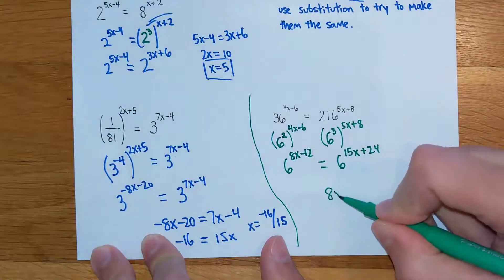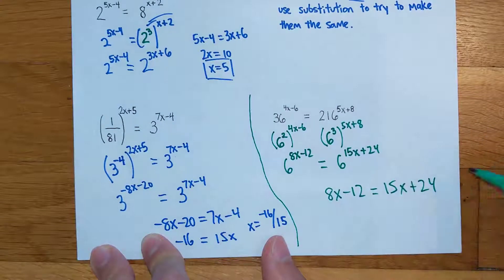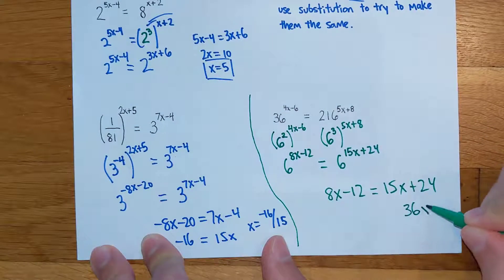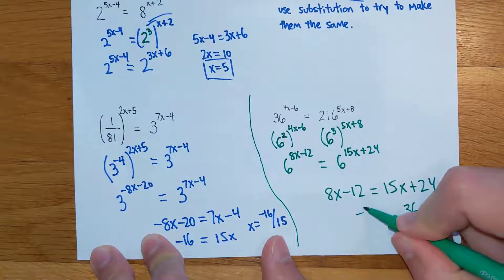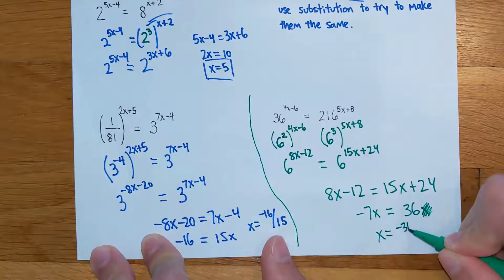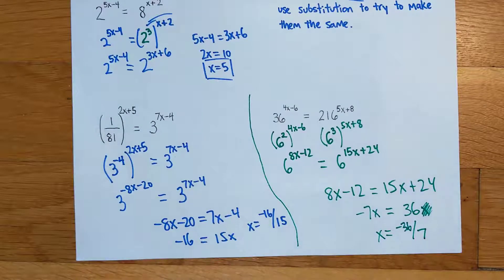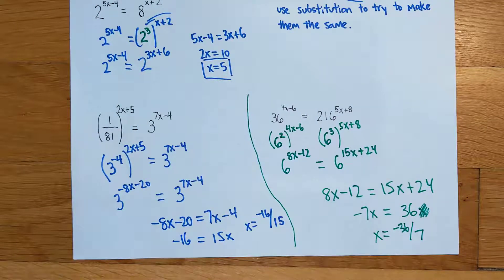Then we're just equaling our exponents. And if you actually solve this equation, add the 12, negative 7x, looks like you're going to get negative 36 over 7 for your solution. So you just make the bases the same, equal your exponents.